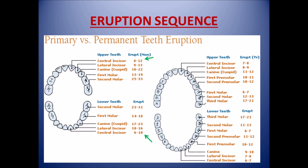Now coming to permanent dentition, the first teeth to erupt are the first molars at 6 to 7 years, followed by central incisors, then first premolars, canines, second premolars, second molar, and then third molars. Third molars are the last teeth to erupt in permanent dentition, around the age of 17 to 21 years.